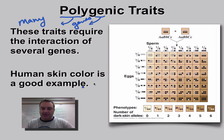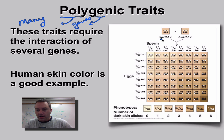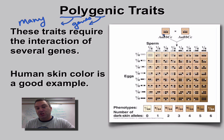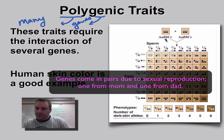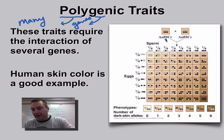Human skin color is a good example. We have three different gene pairs involved in your skin color. Since genes come in pairs, three times two gives us six, so we have the interaction between six different alleles — or three different gene pairs — leading to your skin color.